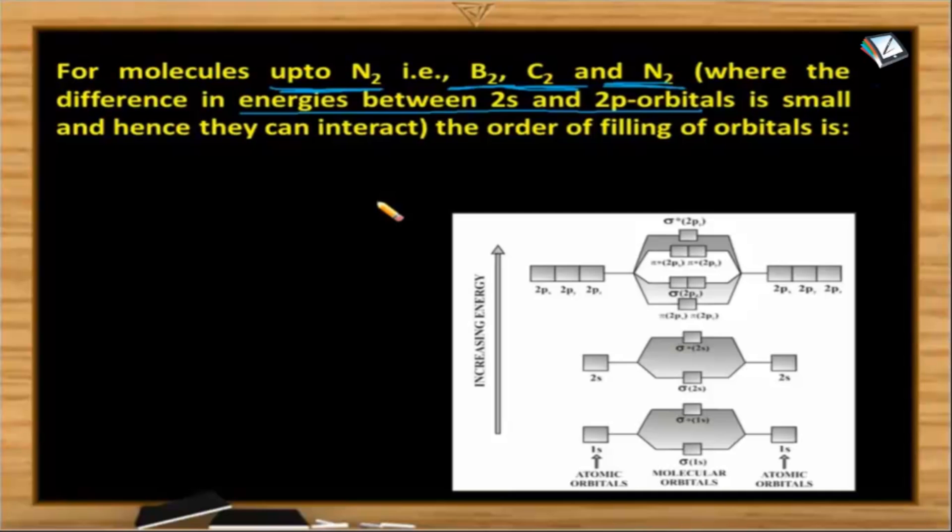The order of filling of orbitals, that is molecular orbitals, is like this. The one which is having the lowest energy, that is sigma 1s, then comes sigma star 1s. We know that out of the two molecular orbitals formed by the combination of the 1s orbitals, one is the bonding and other one is the anti-bonding. And the bonding molecular orbital has energy as lower energy than that of the anti-bonding molecular orbital. And again we know that when compared to 1s orbital, 2s orbitals has higher energy. So then comes sigma 2s, which is less than sigma star 2s.